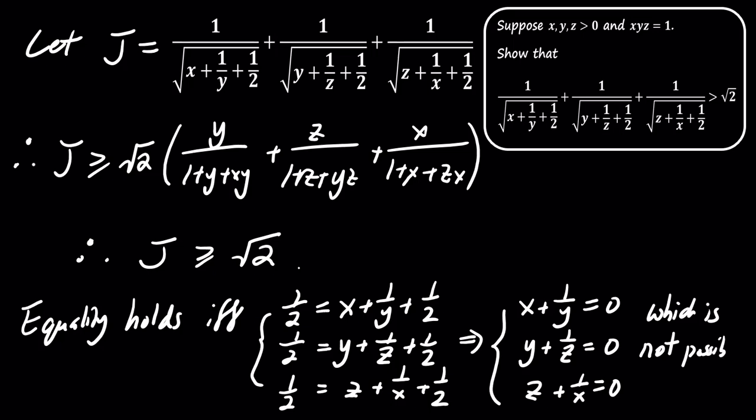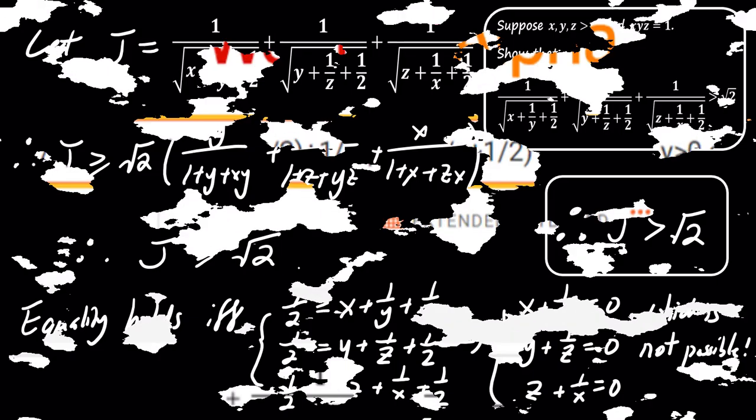Therefore, equality does not hold, and we conclude that j is strictly greater than the square root of 2.